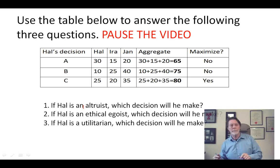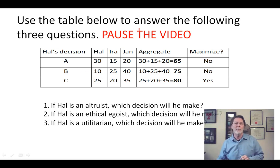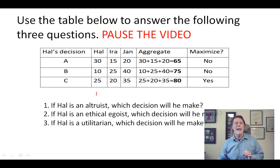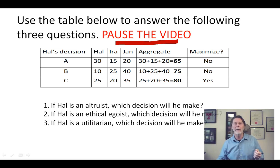Here's a little quiz for you. Use the table below to answer the following questions — just pause the video for a moment. Hal can make three possible decisions: A, B, and C. Pick out the one where he's acting as an altruist, the one where he's acting as an ethical egoist, and the one where he's acting as a utilitarian. Pause the video and think about this.